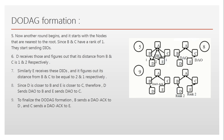Upon receiving these DAOs — B upon receiving the DAO from D and E, and C upon receiving the DAO from E — they complete the DODAG formation by sending the DAO-ACK message. B sends the DAO-ACK to D, and C replies with the DAO-ACK to E.